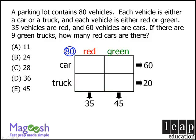At this point, we cannot say how many vehicles must be placed in each of our four boxes — we only know the sums of the boxes in each row and each column. To fill each box, we now need a seed, and here it is: we are told that we have nine green trucks, so we can place this information in our table right here, since this box is reserved for green trucks. From here, we can complete our table. The sum of the green column must be 45, so the green cars box must be 36. The sum of the trucks row must be 20, so the red trucks box must equal 11. And the sum of the cars row must be 60, so the red cars box must be 24.